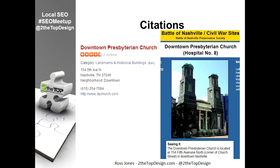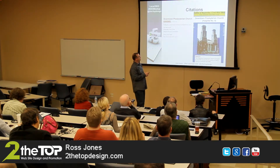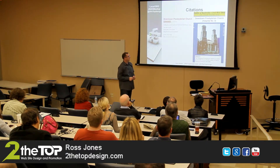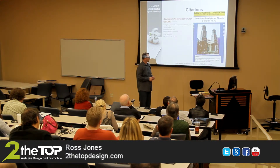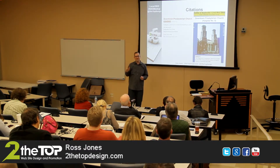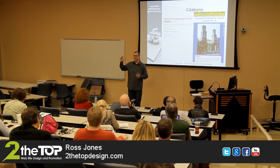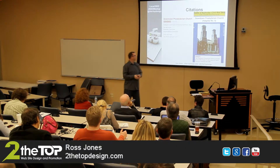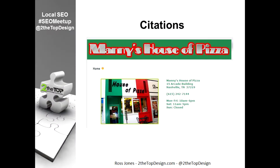This is an example of a structured citation, and this is an example of an unstructured citation — battleofnashvillecivilwar.org talking about the downtown Presbyterian church, with text saying it's located at '154 5th Avenue North at the corner of Church Street in downtown Nashville.' That's a mention of a business, but to be a citation, Google has to be confident it's talking about the same place. If somebody just says 'at the downtown church on 5th Avenue,' that's probably not enough for Google to count it as a citation. The more citations you have, the better — and the more consistent they are, the better.